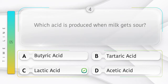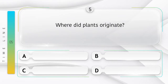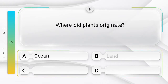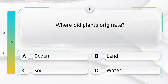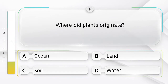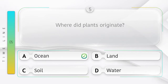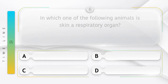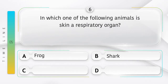The answer is option C, Lactic acid. Where did plants originate? Options: A) Ocean, B) Land, C) Soil, D) Water. The answer is option A, Ocean. In which of the following animals is skin a respiratory organ? Options: A) Frog, B) Shark, C) Whale, D) Cockroach.